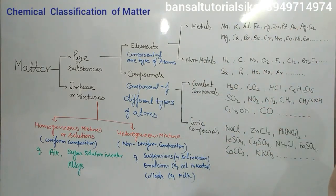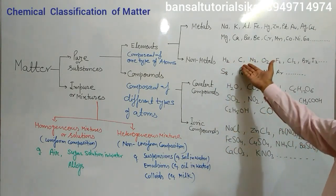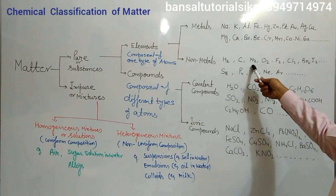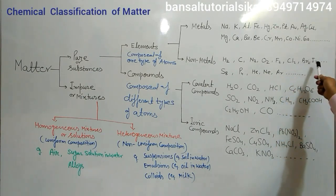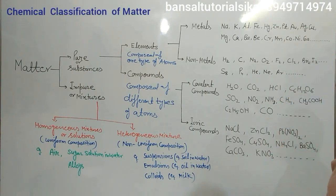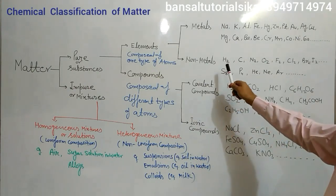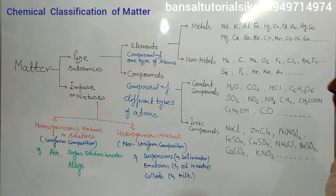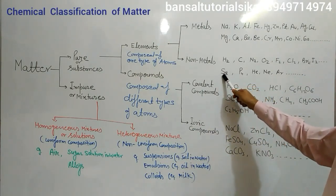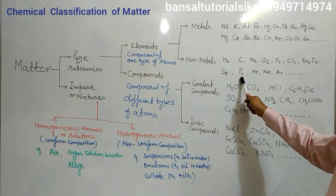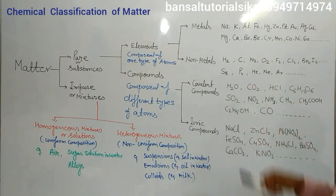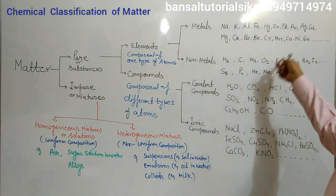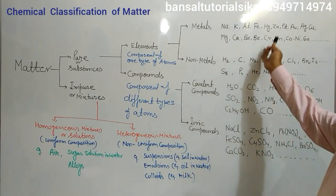In case of non-metals, we take examples of hydrogen gas H2, carbon, oxygen gas, chlorine, bromine which is liquid at room temperature, iodine which is solid at room temperature, sulfur which consists of 8 atoms in one particle (S8), phosphorus composed of 4 atoms of phosphorus (P4) which is solid at room temperature, helium, neon — these are all noble gases. These are all composed of only one type of atom, so these are all elements.